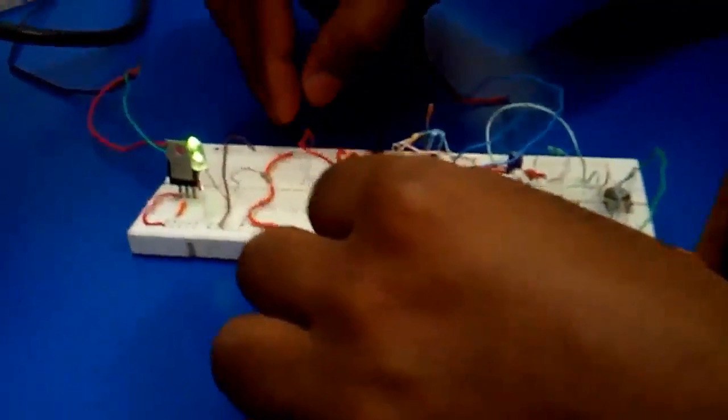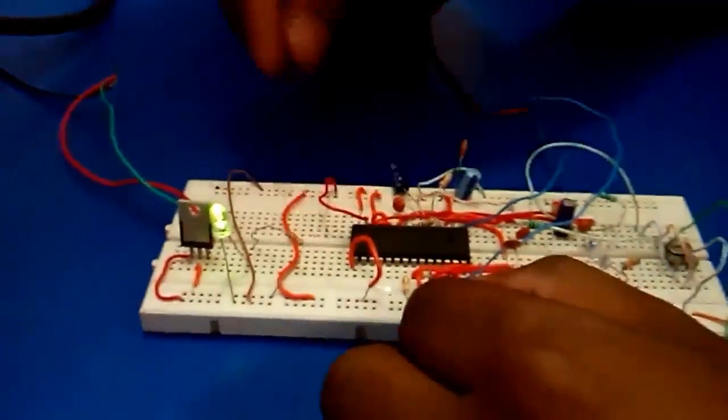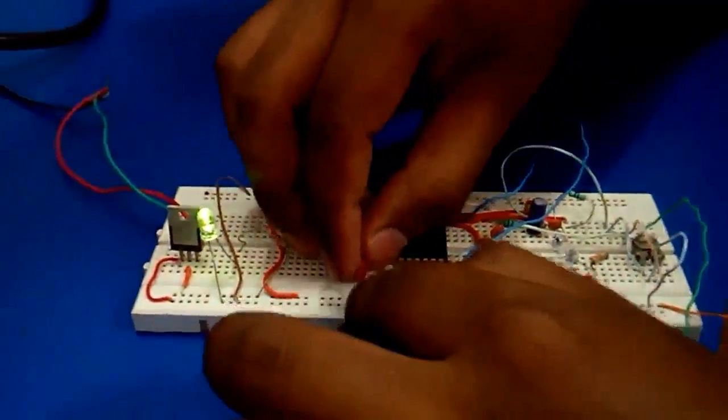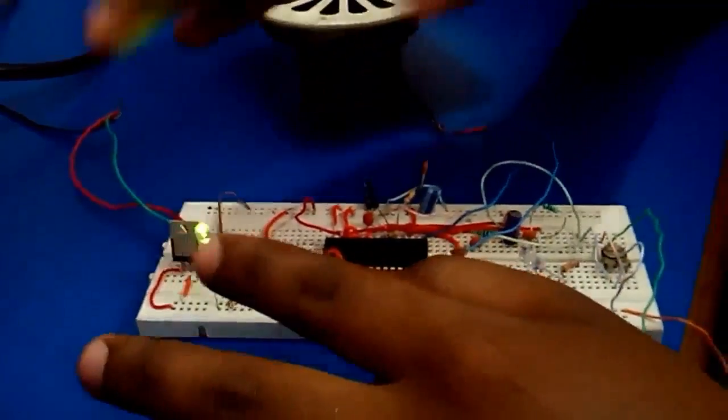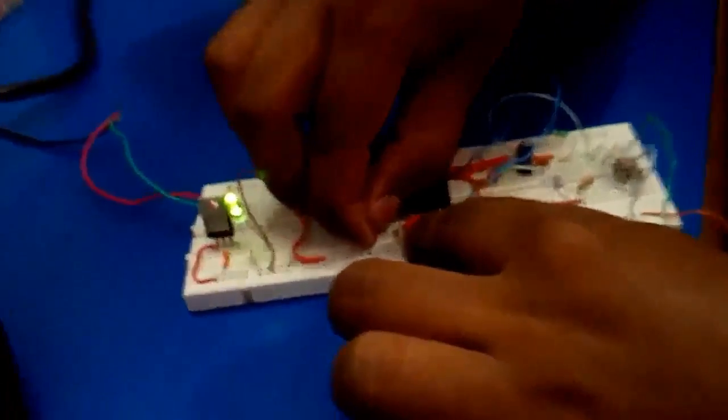For that we have to first make the record pin low, and then the message pin low. When we put this message pin low, we will hear a beep that will indicate that the recording has been started. This means that the recording has been started now and we play it. And if you want to play this one too.